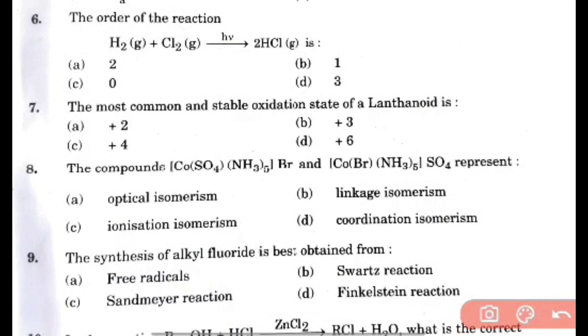The compound CuSO4(NH3)5Br and Cu(Co)Br(NH3)5, SO4 and Br are interchange. Here is ionization isomerism, option C.